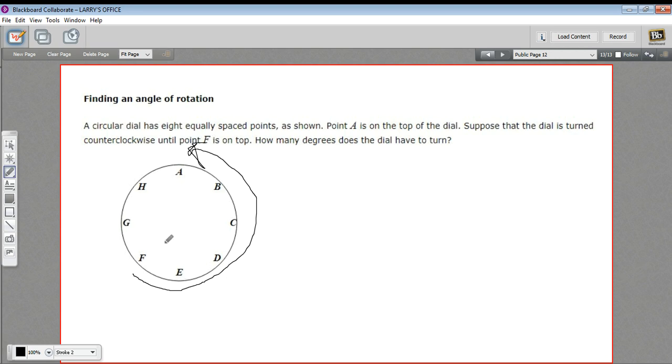Just from looking at this, it looks like I'm turning more than half the circle. So I know my answer is going to be greater than 180 degrees. But how do I figure out exactly how many degrees I have to turn the circle?